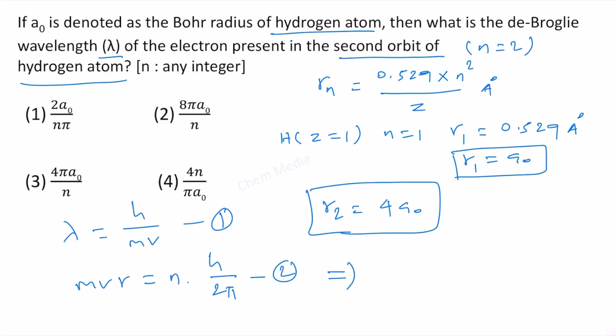Let us equate these two equations. From these two equations, we can write that 2πr, that is the circumference, is equal to n times h by mv and therefore, this is equal to nλ. What this equation 2πr equal to nλ means is that the circumference of the orbit should be an integral multiple of the wavelength of the electron wave.